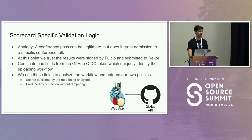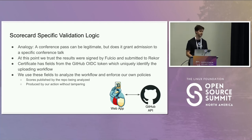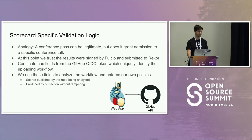A conference pass can be legitimate and get you into a conference, but that doesn't mean you can get into every conference or talk — at OpenSSF Day, they checked your badge to make sure you signed up. That's the analogy for conference tickets. Just because some results were signed by Rekor and came from a GitHub workflow, that's still not enough for us to say we want to use these in our dataset. For that, we look at the certificate from the transparency log, because it has fields from GitHub that uniquely identify the workflow. Then we can reach out to GitHub and do our own logic. This is where Sigstore's general provenance and attestation ends, and the Scorecard-specific logic begins — scores being published by the repository they're analyzing, produced by our official GitHub action without any tampering.